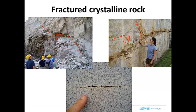This is a close-up of a fracture in some granite near Elberton, Georgia. You can see the open space along this very simple fracture.